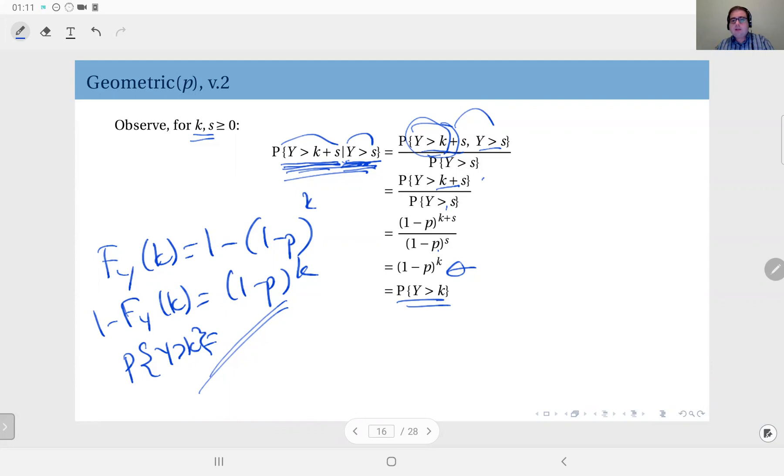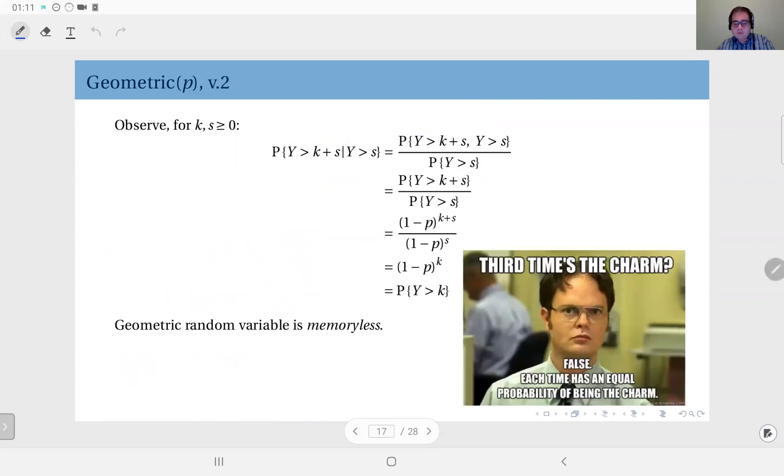So the clock is like reset at that point. That means essentially this distribution forgets the past. So this we call the memoryless property.